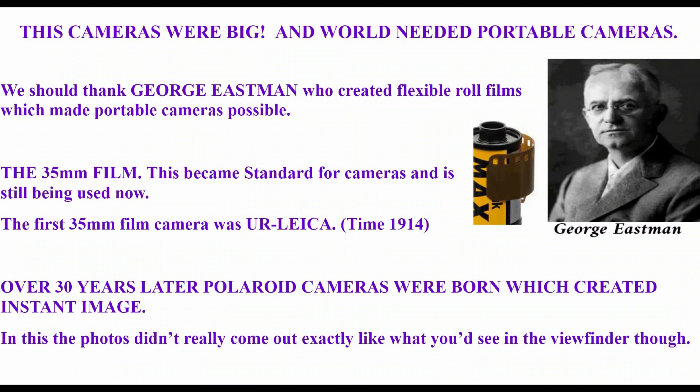The world needed portable cameras. George Eastman created flexible roll films, which made portable cameras possible, and then the 35mm camera came. These cameras used a convex lens to take real inverted images, because light rays always travel in a straight line until they hit a medium — in this case, glass. The glass causes the light rays to refract or bend, causing them to form an inverted image on the opposite side of the medium.